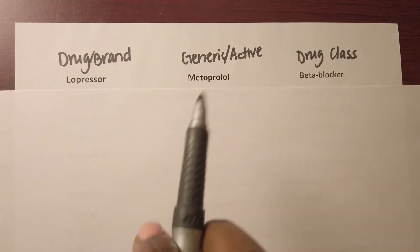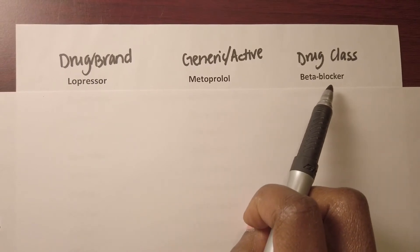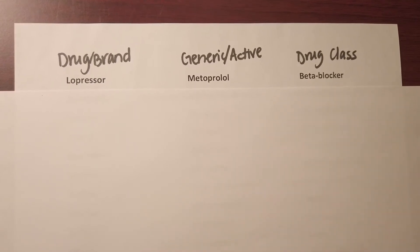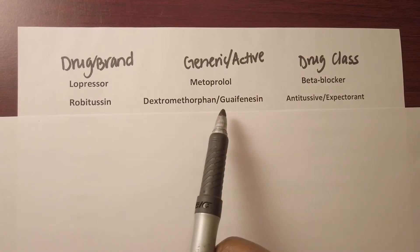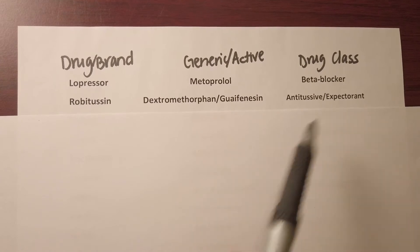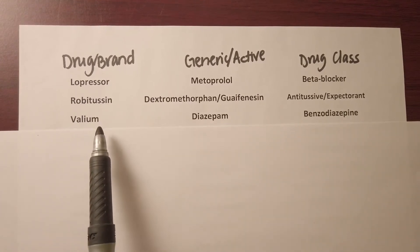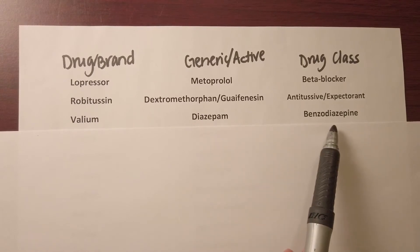Lopressor, generic name metoprolol, is in the drug class beta blocker, useful for high blood pressure or increased heart rate. Robitussin contains dextromethorphan and guaifenesin; it's an antitussive or expectorant. Valium, generic name diazepam, is a benzodiazepine used for sleep, seizures, or anxiety.